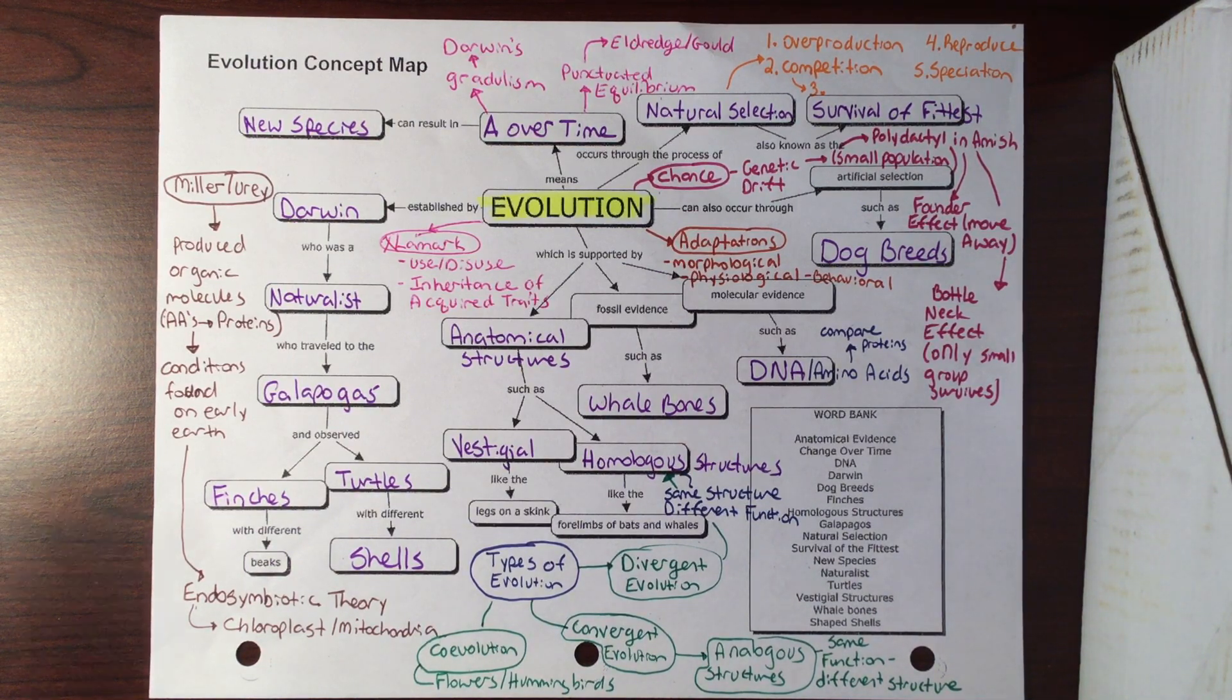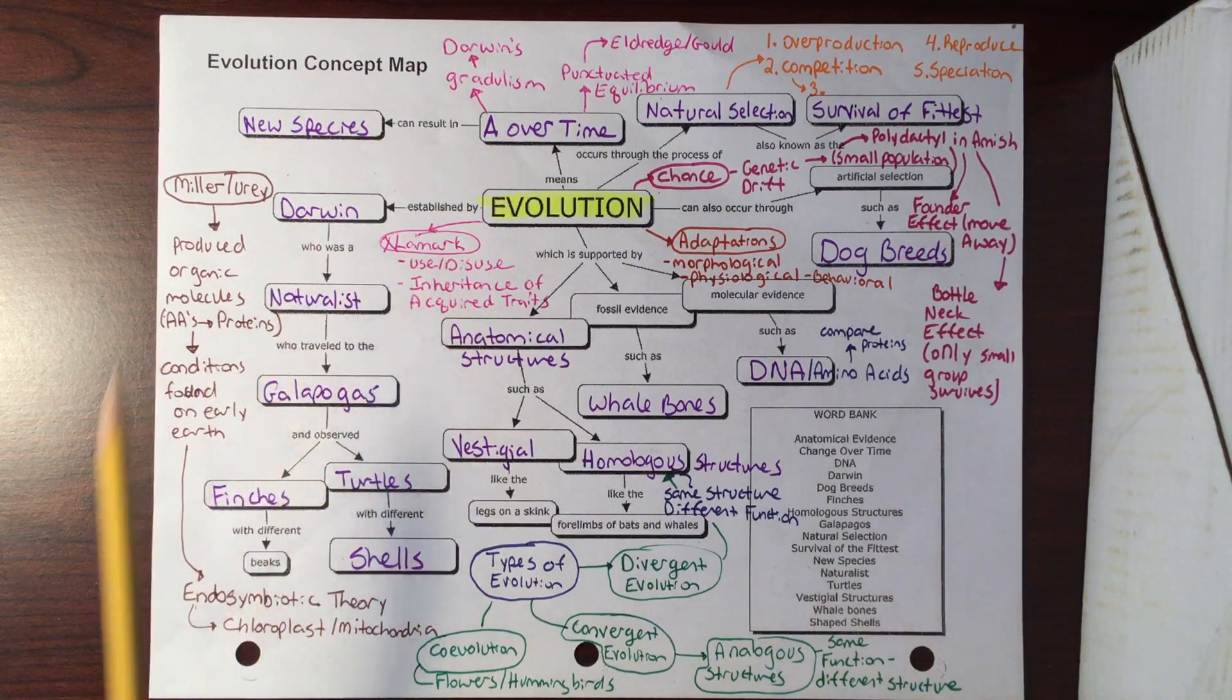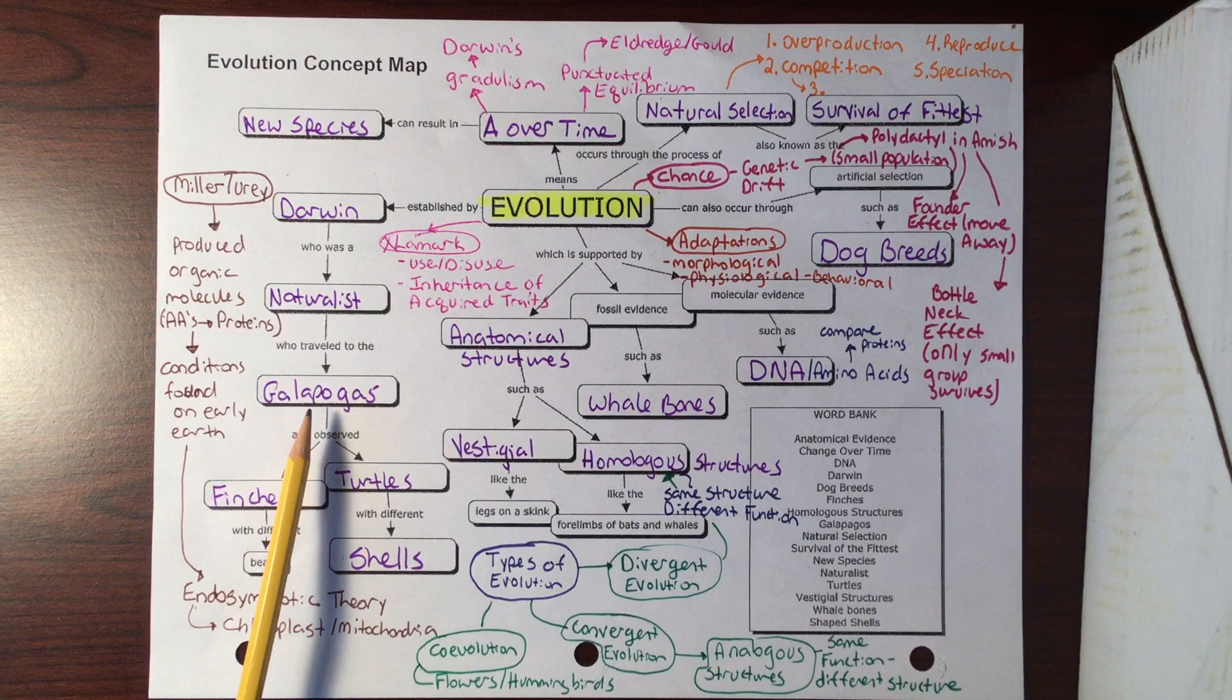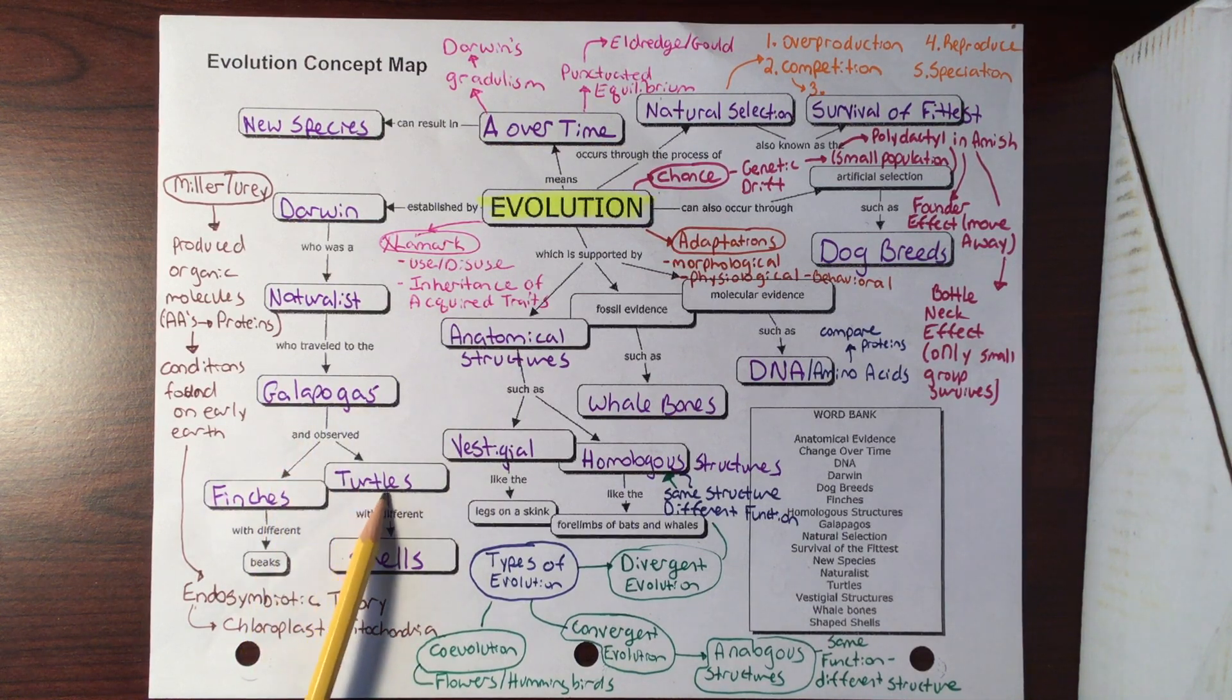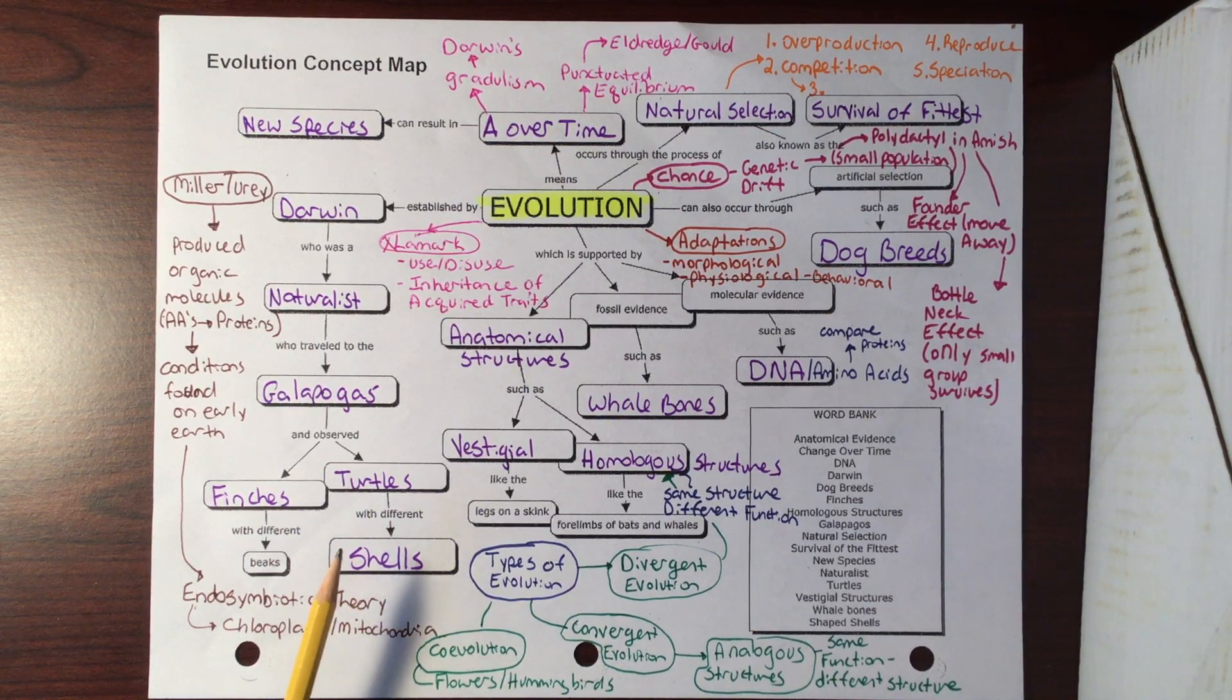Inheritance of acquired traits - if you pick something up in your lifetime, you pass it on. The giraffes stretch their necks, so the next generation had longer necks. Darwin kind of disproved all of that. Darwin was a naturalist. He traveled to the Galapagos on the HMS Beagle.